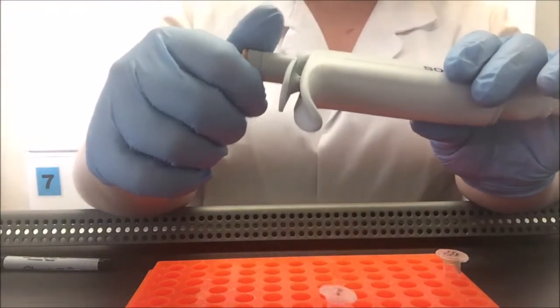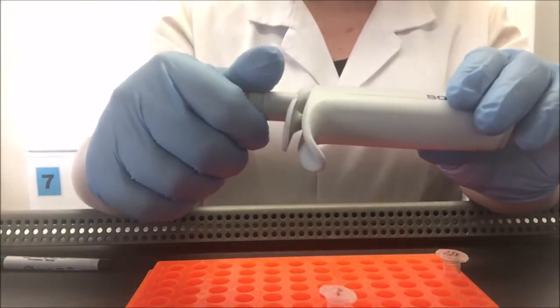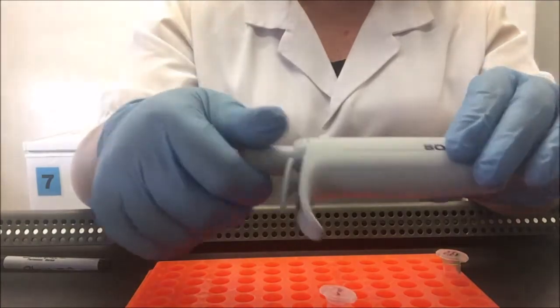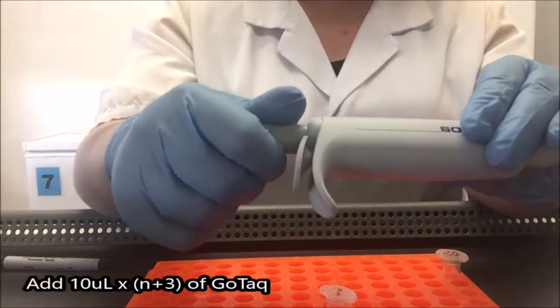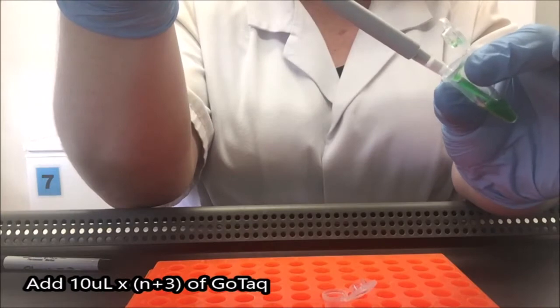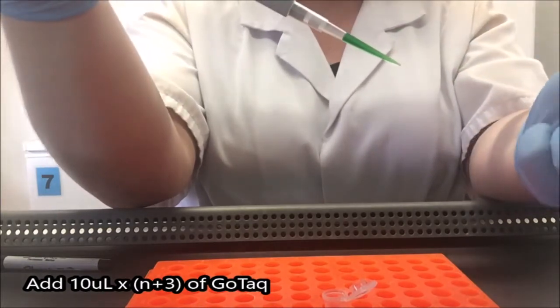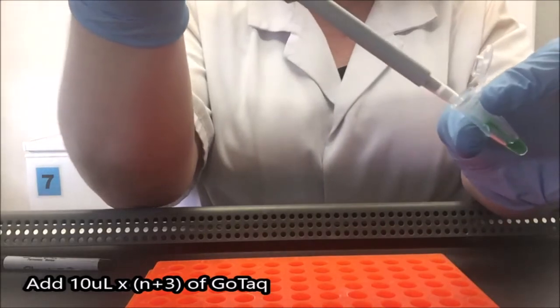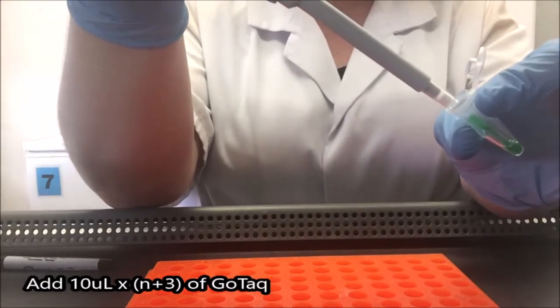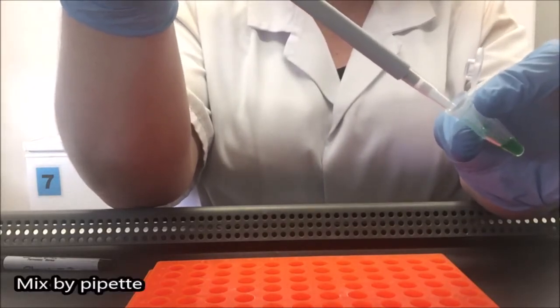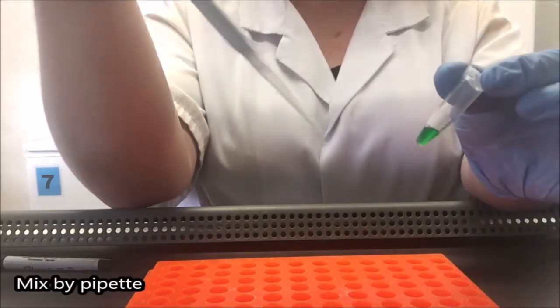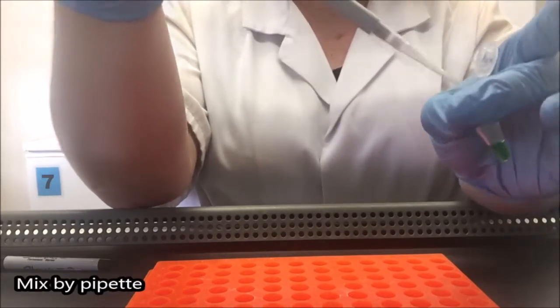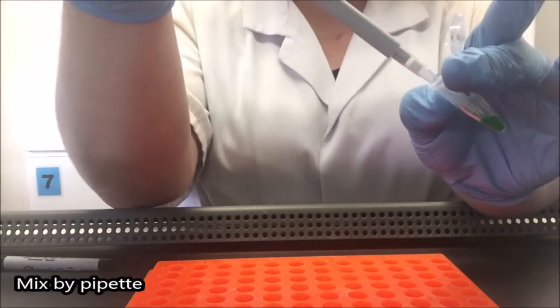Finally, I need 10 microliters for every sample, so 90 microliters total of my GOTAC. I'm adding this last because it's the most expensive reagent. And I want to make sure that if I make a mistake and have to start again, it's before I've committed a large amount of the most expensive product. There we go. You saw there I mixed by pipette, just up and down gently with pipette.